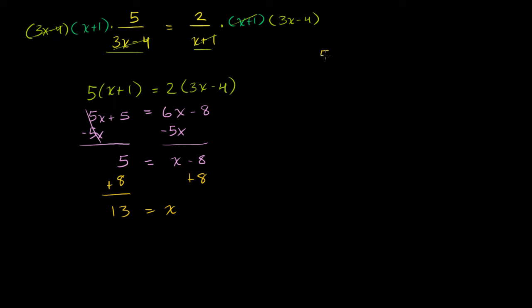You can verify this: 5 over 3 times 13 is 39, and 39 minus 4 is 35. This should be equal to 2 over 13 plus 1, or 14. And they both equal 1/7, so it checks out. Let's do a more involved problem.